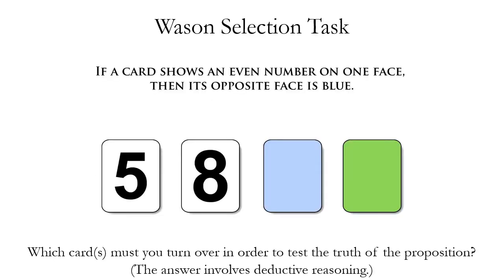To illustrate the ease with which it's possible to commit formal fallacies without thinking about it, we're going to use the Wason selection task. This is used by cognitive psychologists to evaluate people's ability to reason logically. And if you make a mistake on this task, it illustrates the two formal fallacies we're going to discuss in this video.